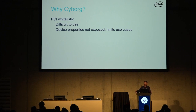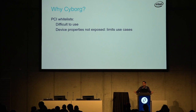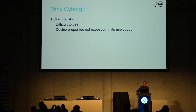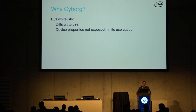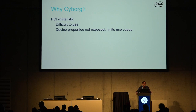So why do we need Cyborg? You already have Nova with GPUs used via PCI whitelists. The problem with Nova's PCI whitelist approach is that it's difficult to use and doesn't expose device properties — it only exposes PCI IDs. For something like a GPU, maybe you can get by, but for an FPGA, the PCI ID tells you nothing about what's inside — it could be a gzip function or a telco EPC workload. You need to look inside the device to find out what function or bitstream is programmed, or what could be programmed. That's what Cyborg sets out to solve.